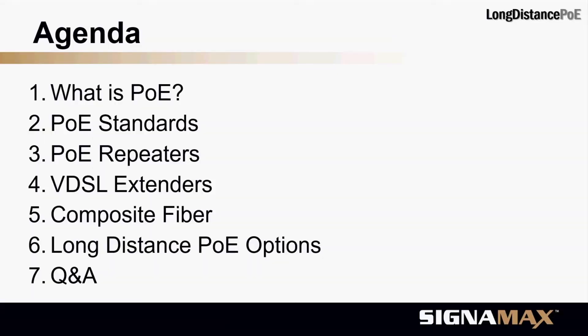What are we going to go over? First, we'll talk a little bit about POE — what it is, why it exists. We'll go over the standards, the differences between them and their specifics related to distance calculations. Then we'll discuss three options for providing POE over distances beyond the standard 100 meters: POE repeaters, VDSL extenders, and composite fiber. We'll then do a comparison between the three options and discuss the use cases and ideal situations for each one.